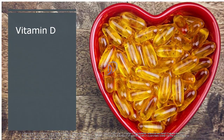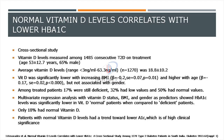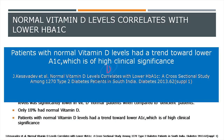Vitamin D has a range of biological functions including cell differentiation, inhibition of cell growth, and immunomodulation. Children receiving vitamin D supplementation during the first year of life have an 80% reduced risk of type 1 diabetes, and children with low vitamin D levels and type 1 diabetes require higher doses of insulin. Our own study presented at the American Diabetes Association found that supplementing vitamin D in deficient individuals and normalizing levels shows a trend towards lower HbA1c.